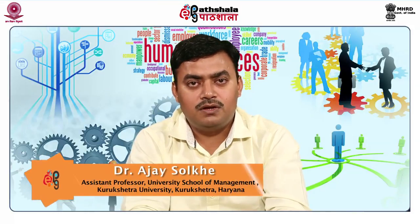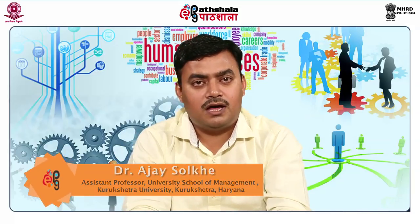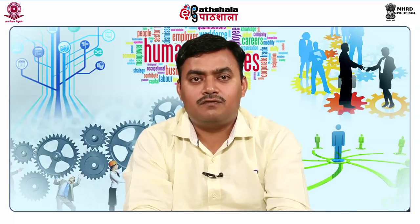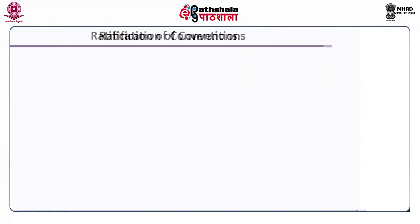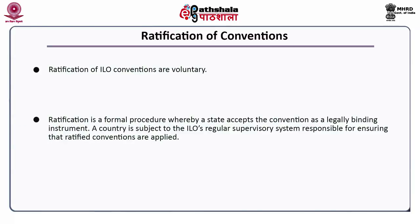International labour standards — both conventions and recommendations — are drawn up by representatives of governments, employers and workers, and are adopted at the ILO's annual International Labour Conference. Once adopted, a standard is to be submitted by the member states to their competent authority for consideration. In the case of conventions, ratification is voluntary. Ratification is a formal procedure whereby a state accepts the convention as a legally binding instrument. A country is then subject to the ILO's regular supervisory system, responsible for ensuring that ratified conventions are applied.